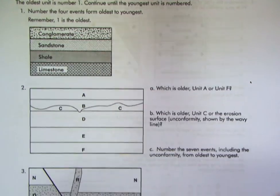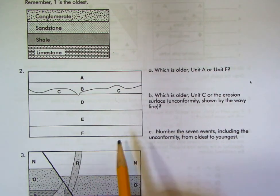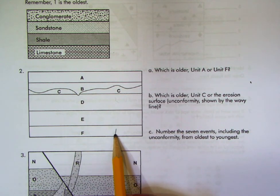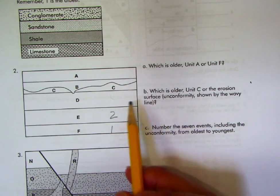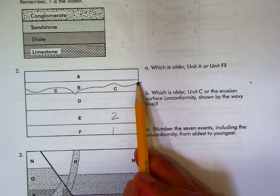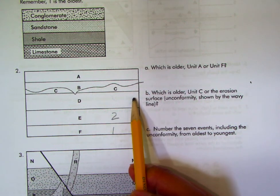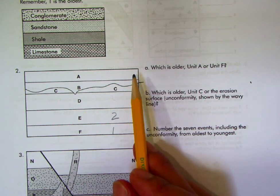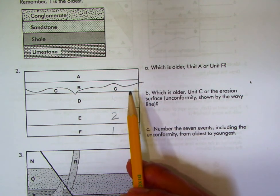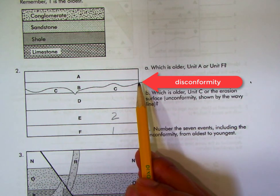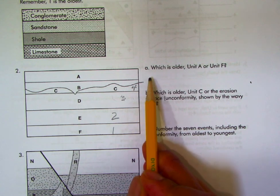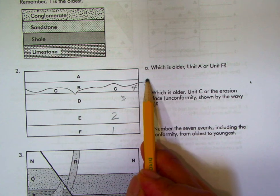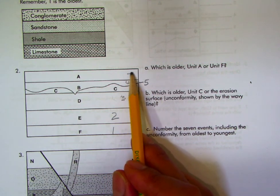For question two, based on superposition, unit F would be oldest (event 1), then E (event 2), and so on. There's also an erosion event — an unconformity — that must be numbered as an event. Because the strata above and below are parallel, it's not an angular unconformity, and there's no crystalline basement, so this is a disconformity — our third type of unconformity. The sequence would be: F, E, D, C, disconformity, B, A — from oldest (1) to youngest (7).